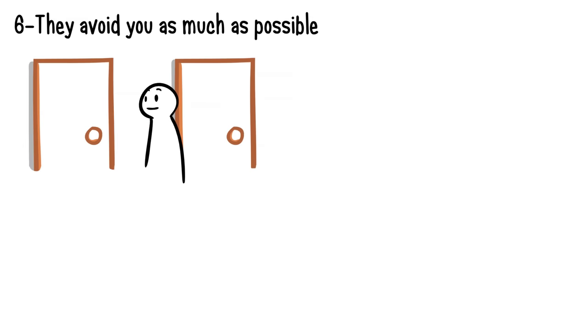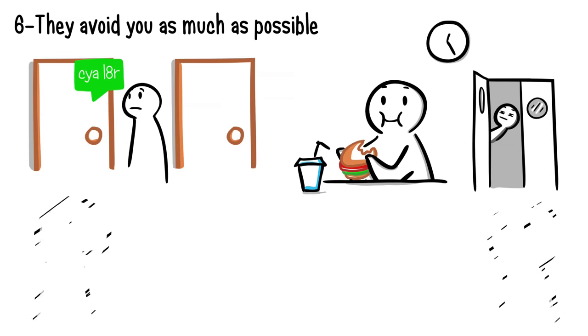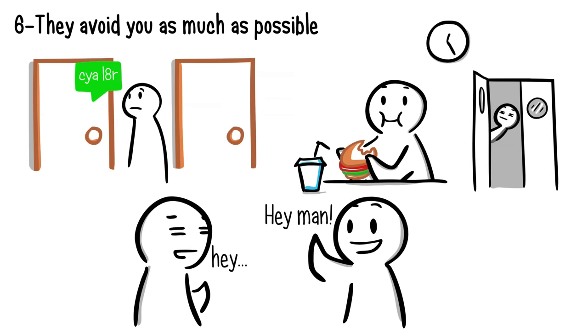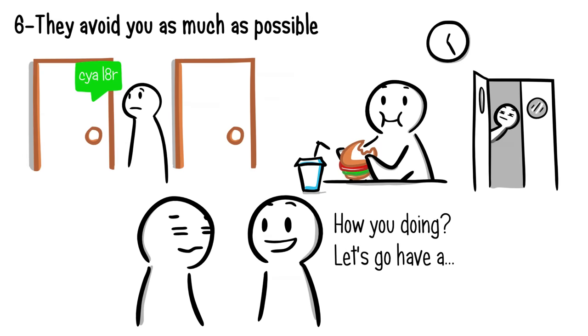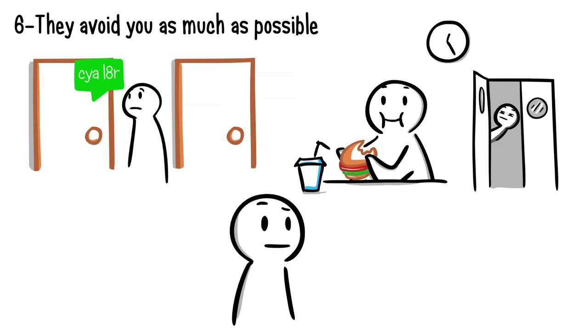Number six: they avoid you as much as possible. Do they live or work in close proximity to you but limit communication to emails or text messages? When someone secretly dislikes you, they will do whatever it takes to have minimum contact with you. It's especially a sign if they find out your schedule just to avoid you during your lunch hours or time you need to occupy the same space. And when you do end up bumping into one another, they'll always have an excuse ready at hand to avoid seeing you again.